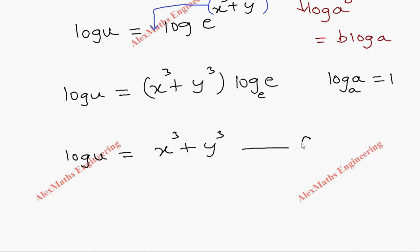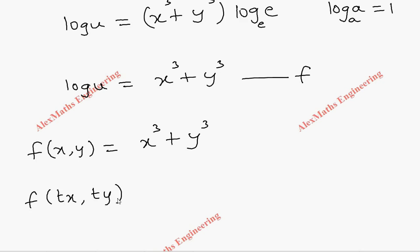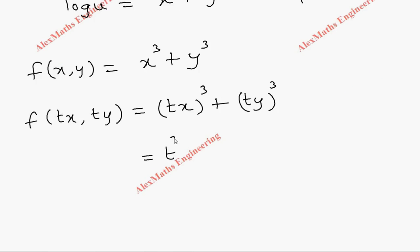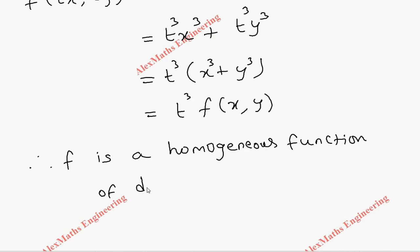Let's name this function f, so f of x, y equals x cube plus y cube. Now we have to check whether it is a homogeneous function or not. We replace x and y with tx and ty, giving (tx) cube plus (ty) cube, which equals t cube times x cube plus t cube times y cube. Taking t cube common, we get t cube times (x cube plus y cube), which is our original function f of x, y. So it is clearly a homogeneous function of degree 3, meaning n equals 3.